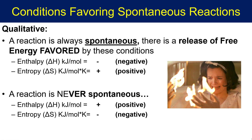When we talk about conditions that favor spontaneous reactions, we can talk about it in two ways: qualitatively without numbers, and quantitatively. Spontaneous processes are always favored when you have two conditions: when your delta H is negative, meaning an exothermic reaction, and when entropy, or delta S, is positive — meaning that the randomness or chaos of the system is increasing.